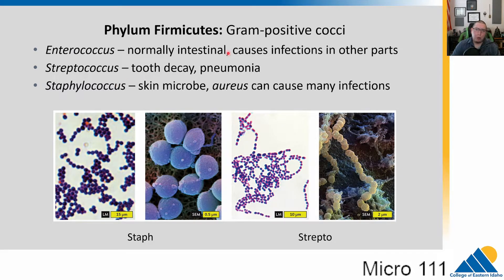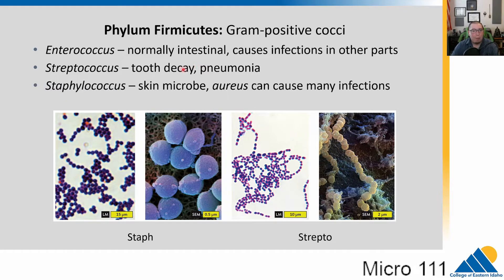A couple of firmicutes to finish up with — some gram-positive cocci. Enterococcus normally lives in your intestines and can cause severe infections when it moves to other parts of the body, like from a puncture wound. Streptococcus can cause tooth decay, with some forms producing acids that decay your teeth, and other forms causing pneumonia. You've probably heard of strep throat. Staphylococcus — a lot of them are skin microbes. Aureus can cause infections in many places when it gets out of place, and we have MRSA, the methicillin-resistant form.